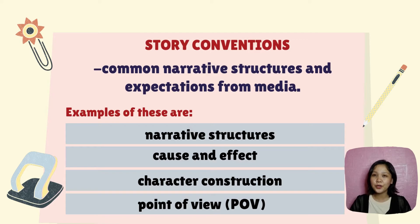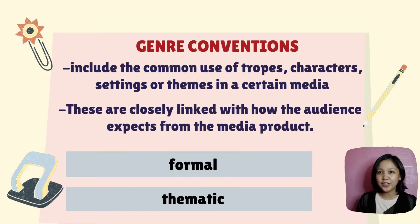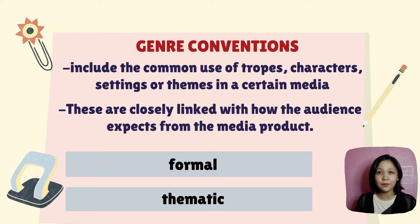Story conventions are common narrative structures and expectations from media. Examples include narrative structures, cause and effect, character construction, and point of view. Genre conventions include the common use of tropes, characters, setting, or themes in certain media. These are closely linked with what the audience expects from the media product and can be formal or thematic.